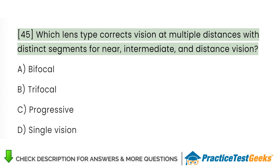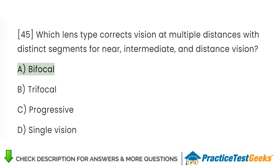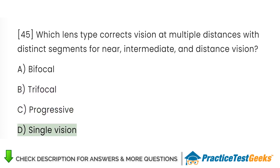Which lens type corrects vision at multiple distances with distinct segments for near, intermediate, and distance vision? A. Bifocal. B. Trifocal. C. Progressive. D. Single vision.